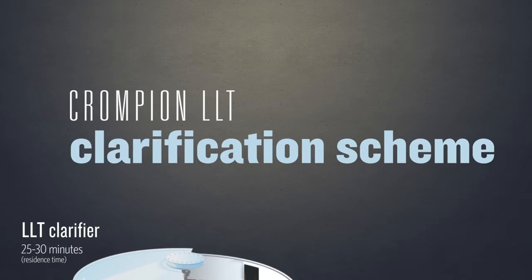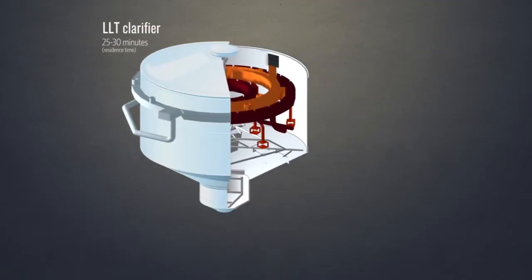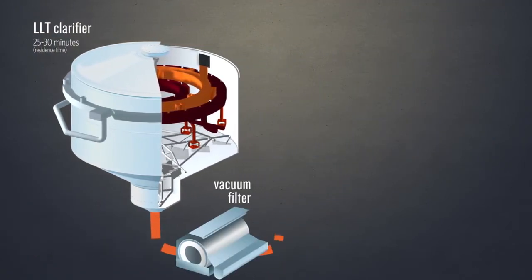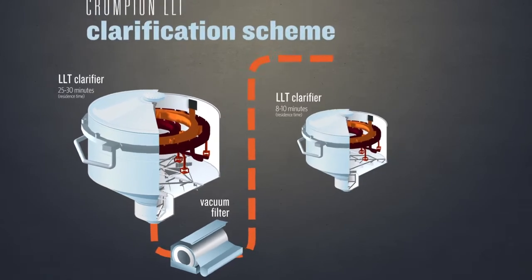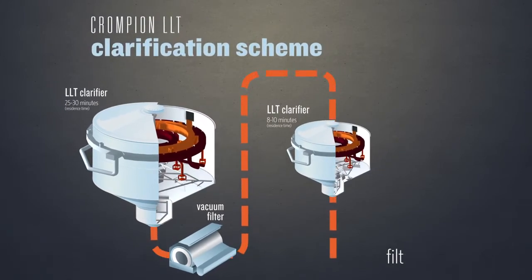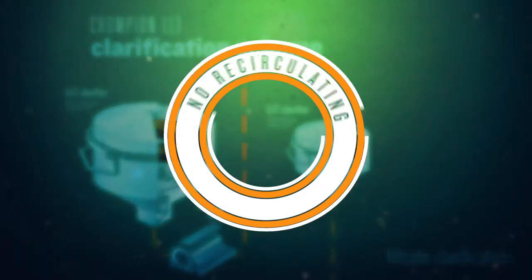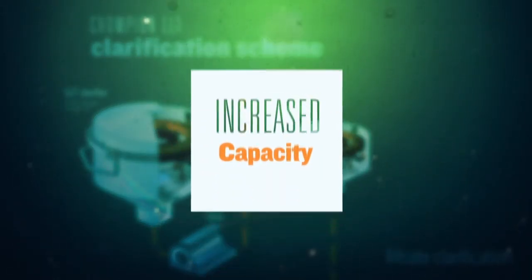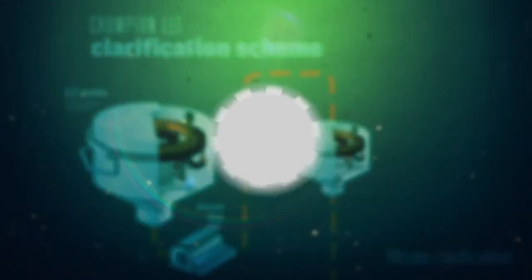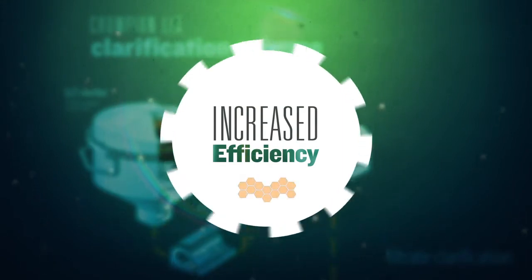An LLT clarifier can eliminate some of these inefficiencies. After the juice has been filtered from the mud, an additional LLT clarifier can be used for filtrate clarification, thus eliminating the need for recirculation, adding potential capacity and making your factory more efficient.